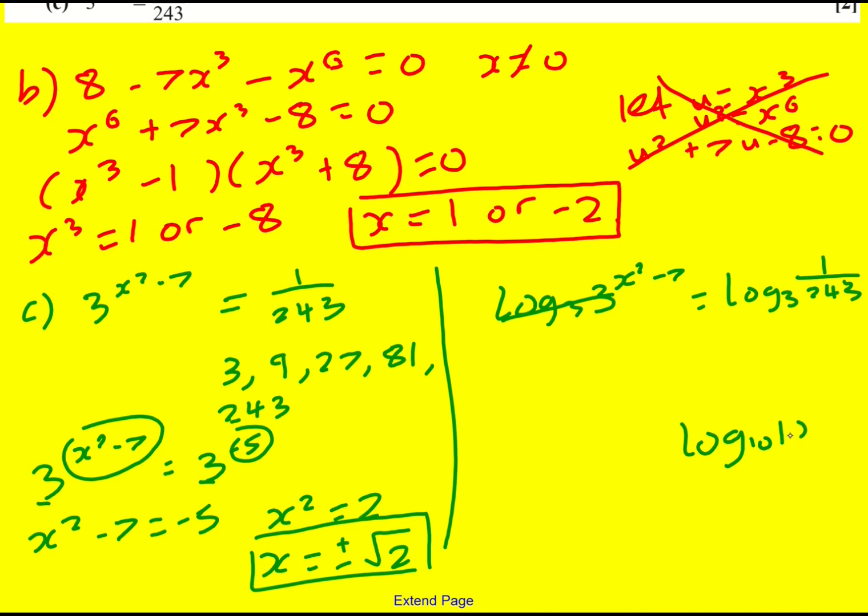log to base 10 of 100 is 2, it's 10 to the power of 2 which is 100. So if I started with this it would be log to base 10 of 100 is 2 so I can look at the power and get that as well, it must be the log to base 3 of 1 over 243 is x squared minus 7.